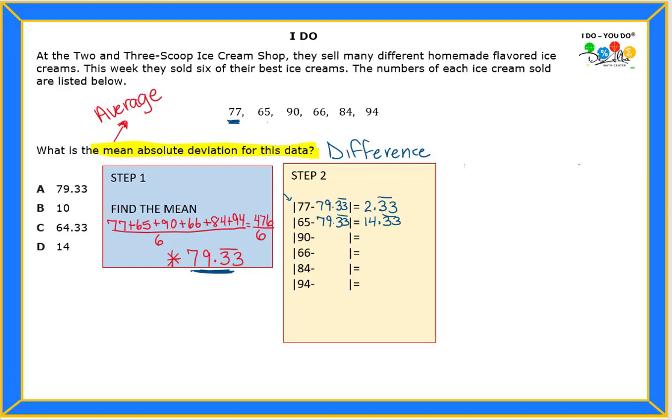We're gonna do the next one, 90 minus 79 point three three. Notice how every number that I'm subtracting is the same thing, 79 point three three, and that gives me 10.67. Next one, it's 66 minus 79 point three three. Go ahead and do that and I get a negative number but my number will be only a positive number.